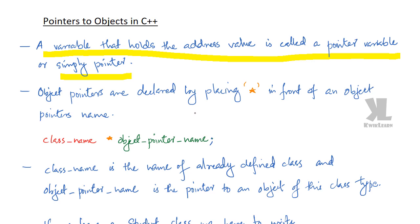If we have a class named student, we write the class name 'student', then we write our object name something like 'student1', followed by a semicolon. If you want to declare an object pointer, we have to write the class name already defined, and then use the asterisk symbol to represent it as a pointer.